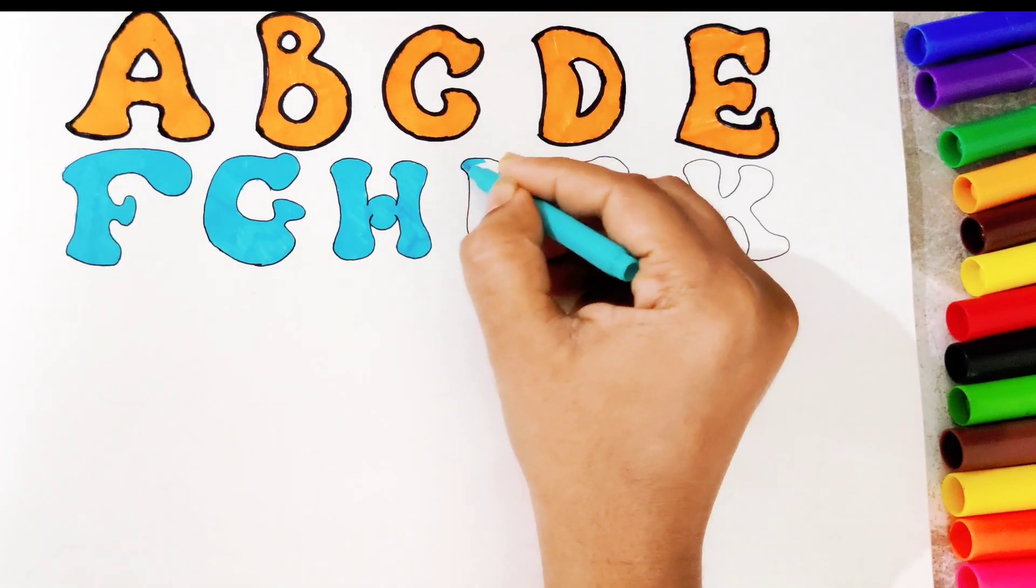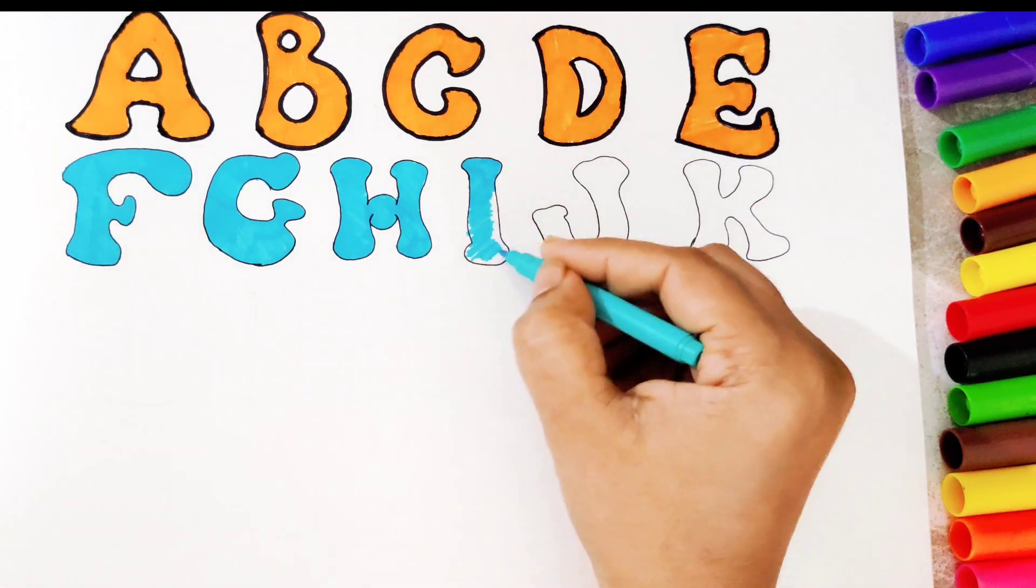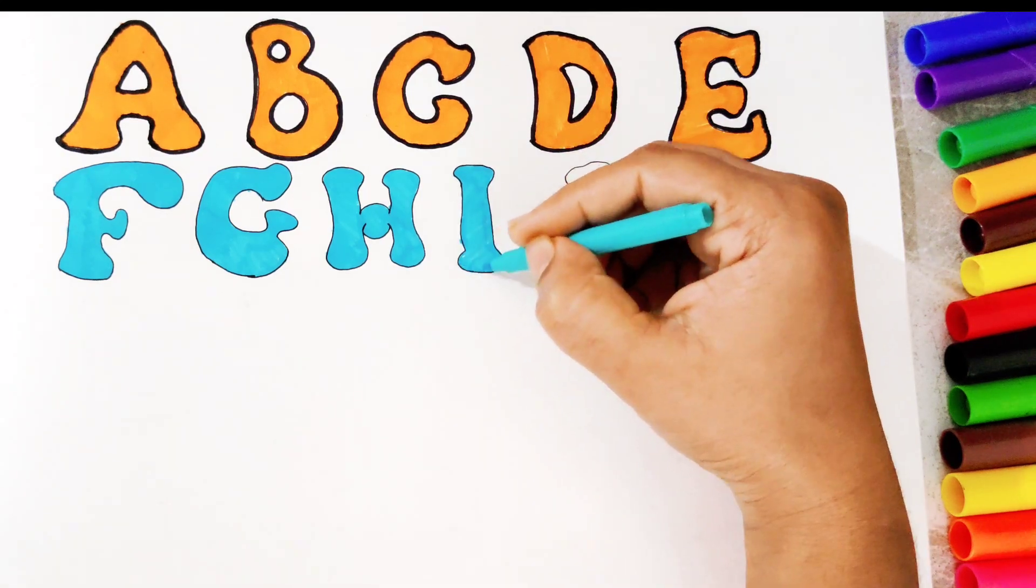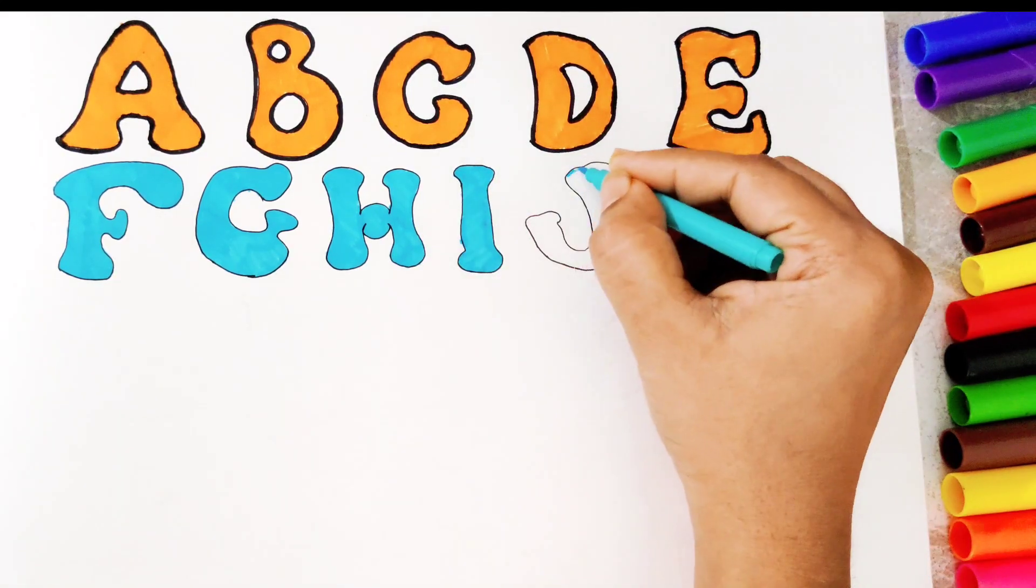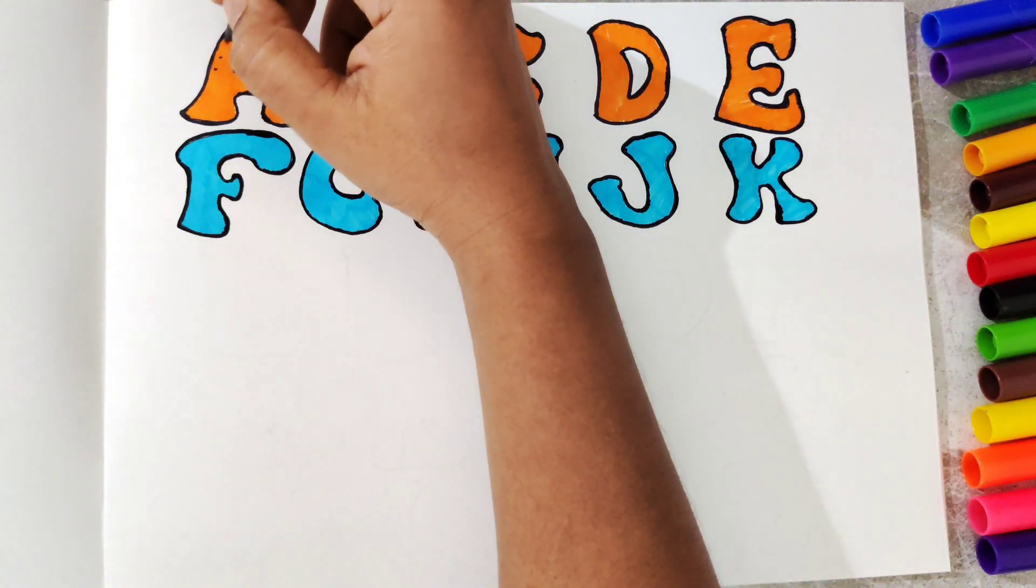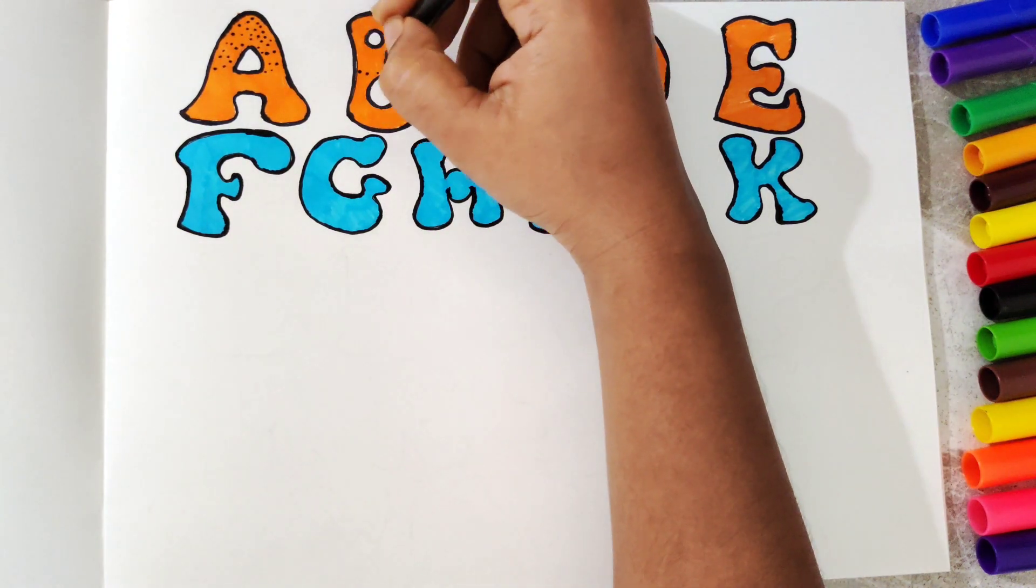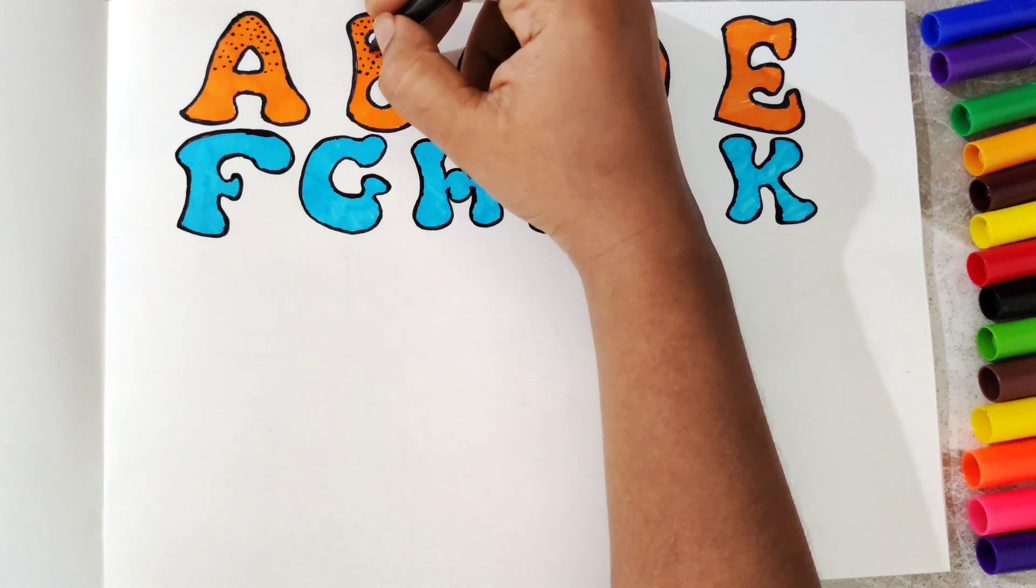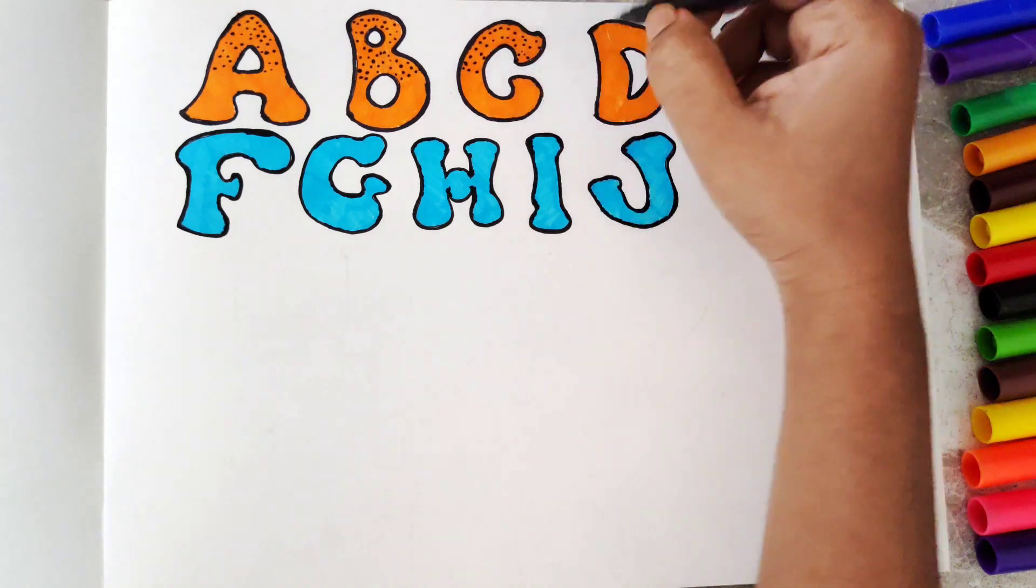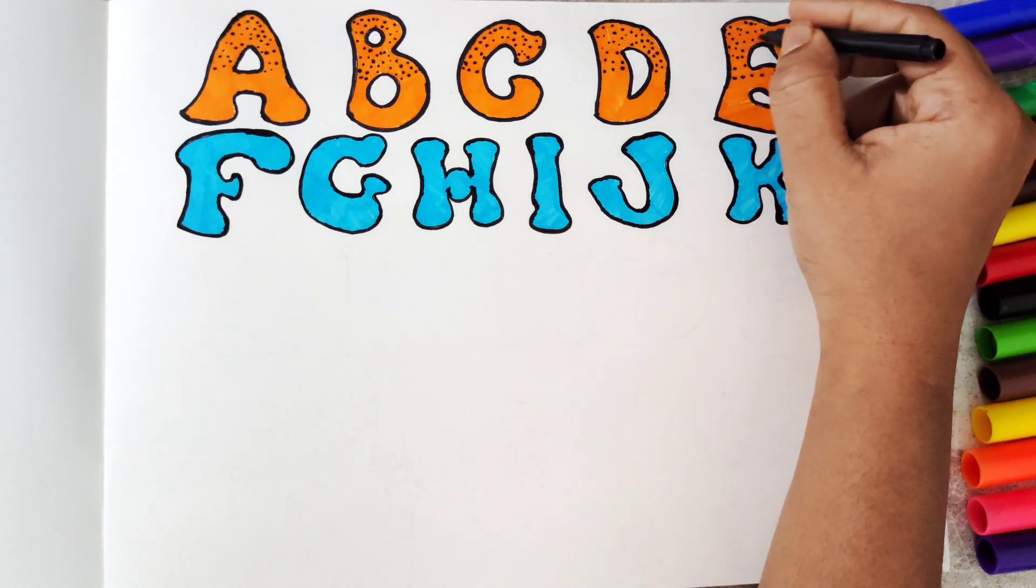We have completed H. Now we will fill the color in. Now let's make something special and magical with these alphabets. Wow, this technique is looking amazing. This pattern you should also try at home.